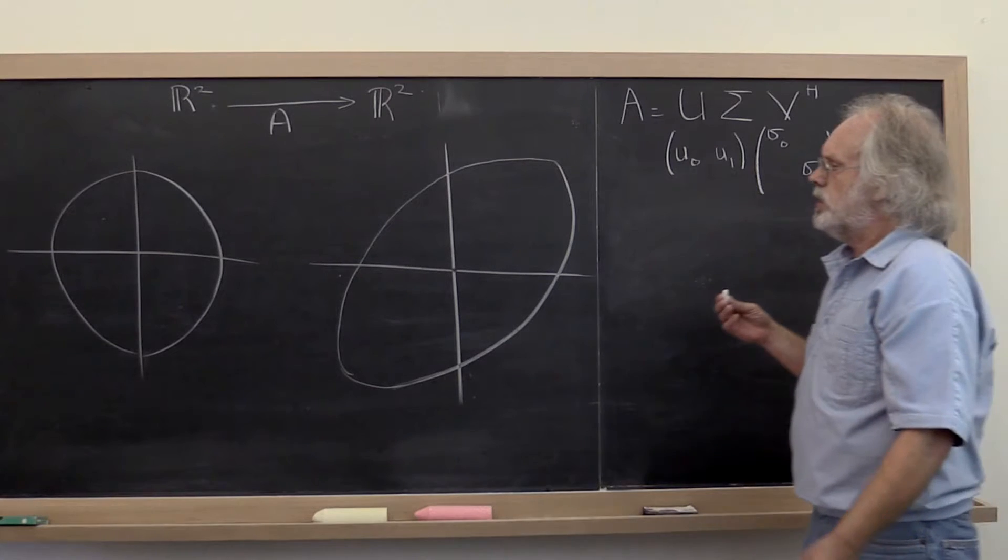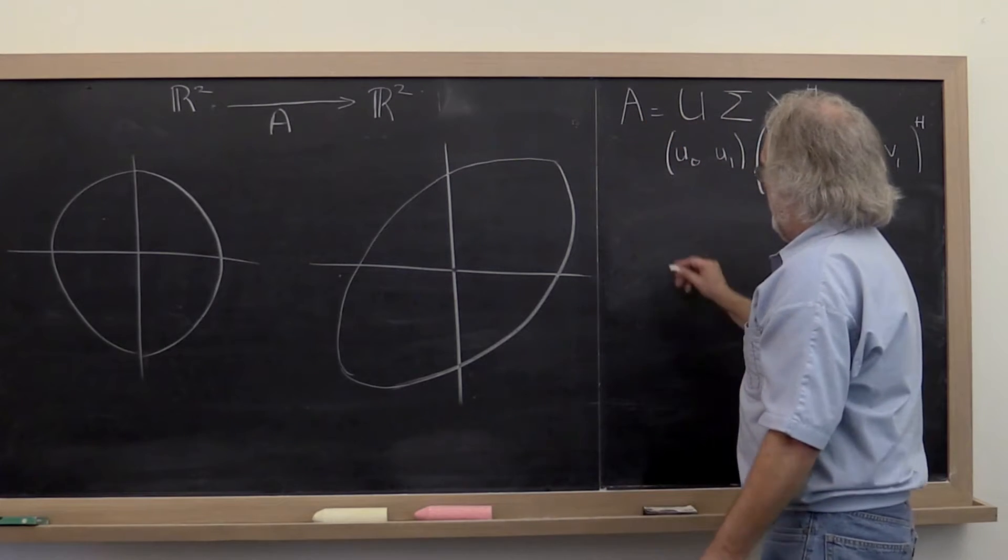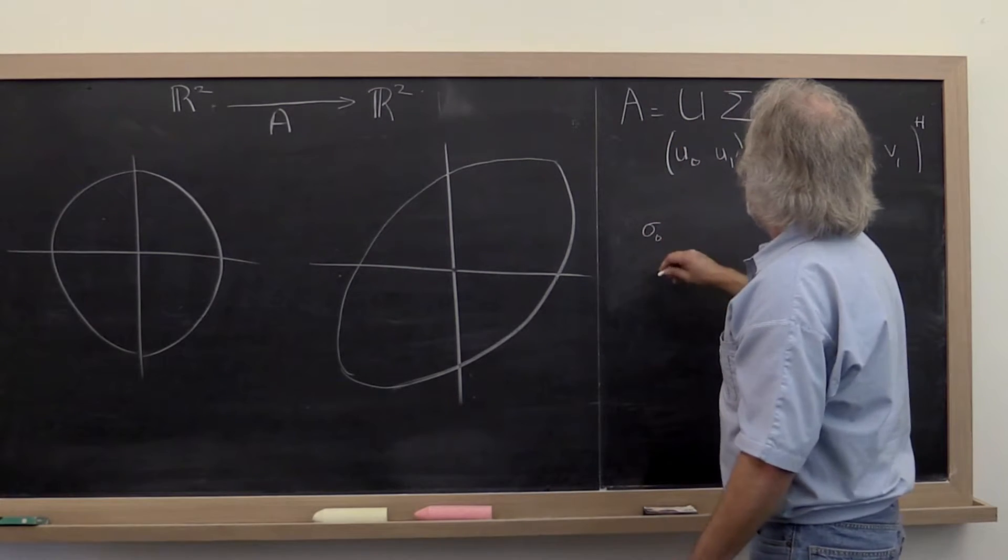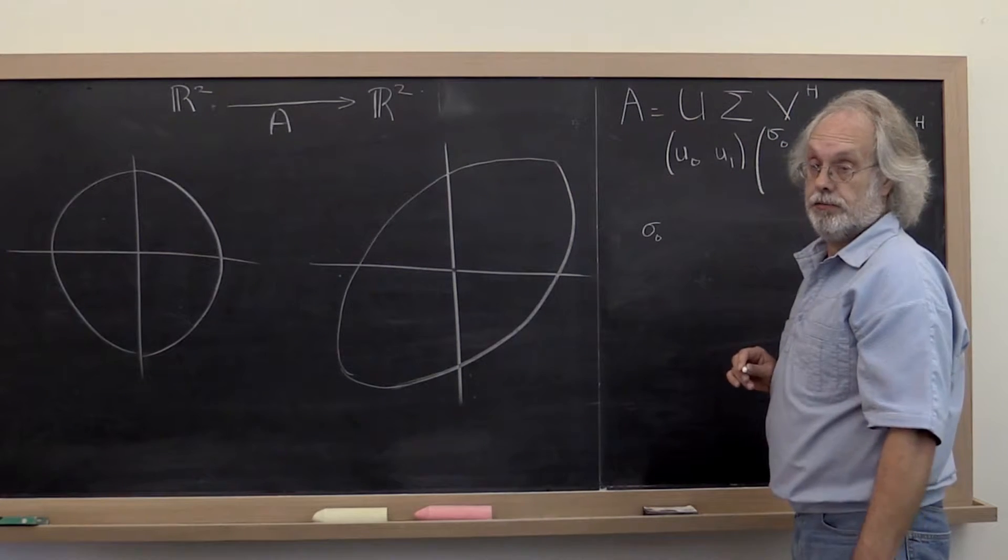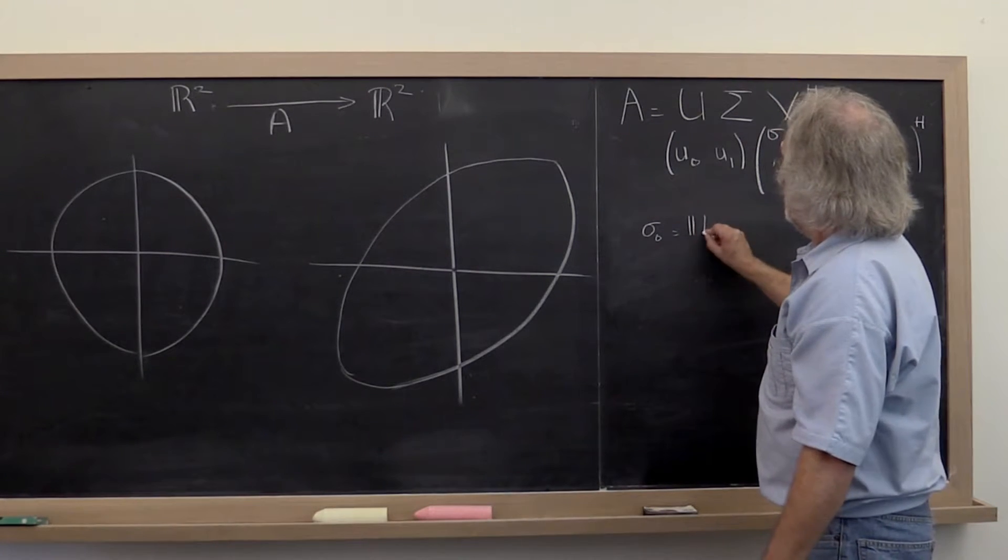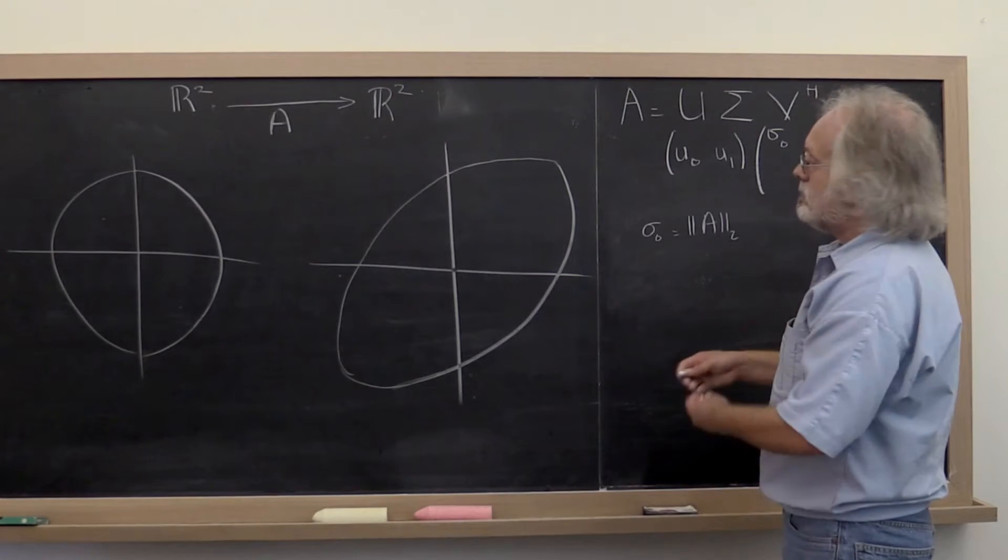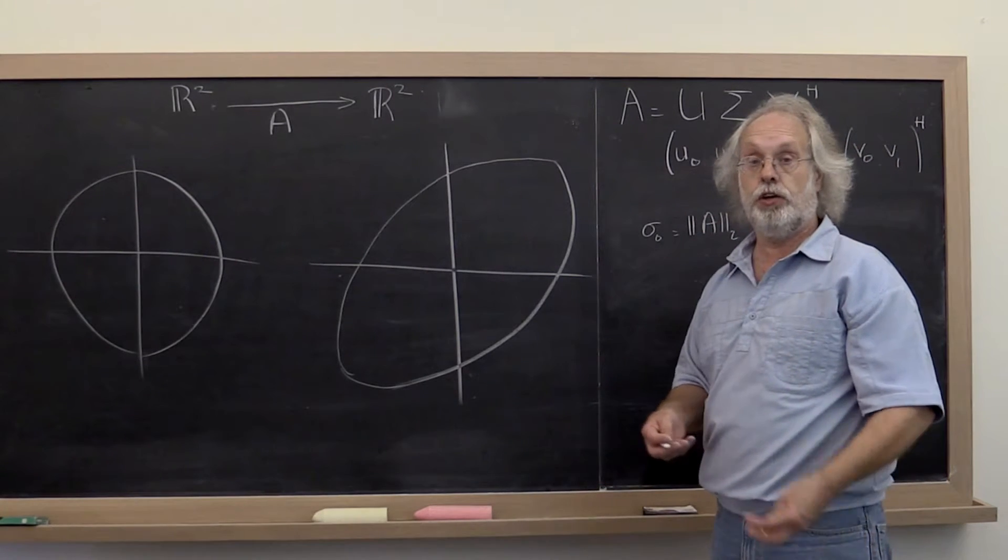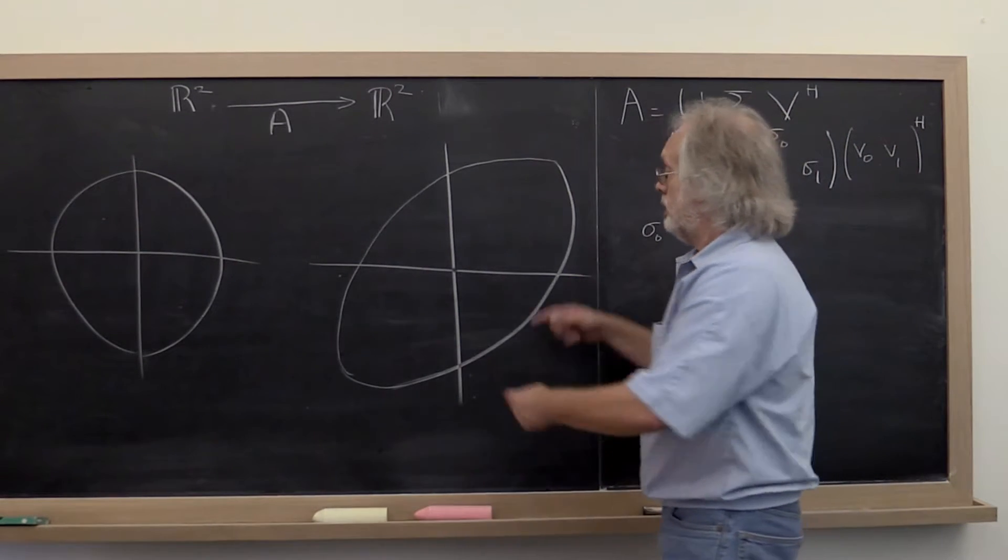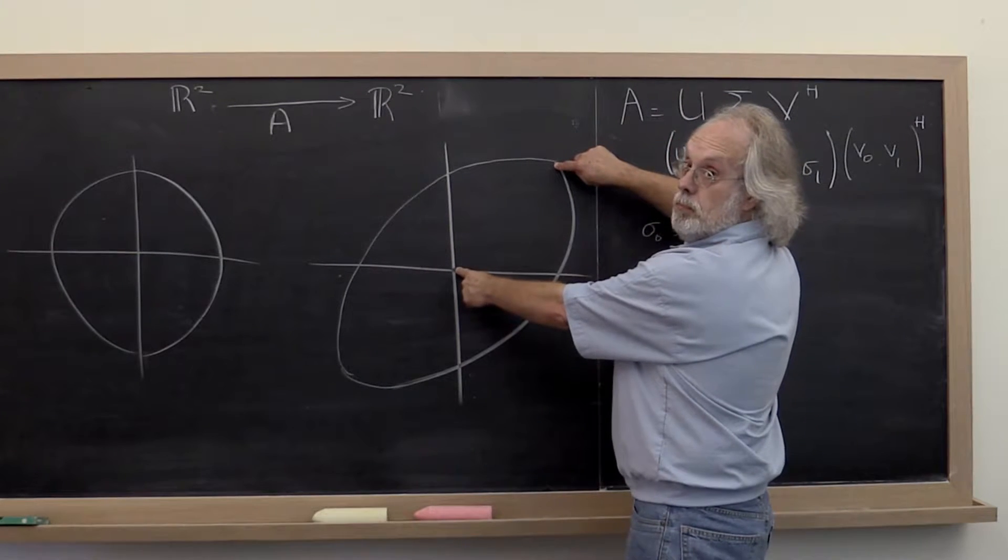Now the 2-norm of A would be sigma 0, the largest singular value. And notice that that was the maximal magnification of a unit vector. This is the maximal magnification.